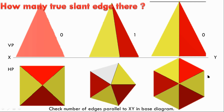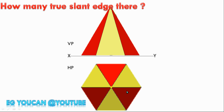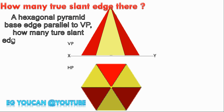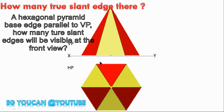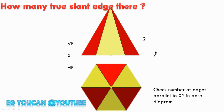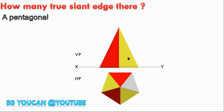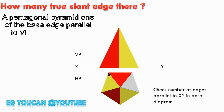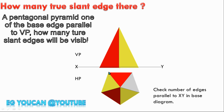I will ask a question. A hexagonal prism of base 20 mm is parallel to the vertical plane. How many true slant edges will be visible in the front view? The right side is XY parallel, the left side is XY parallel — so the number of true slant edges is 2. Either from diagram or theory, the answer is 2. Next condition: a pentagonal prism with one base edge parallel to the vertical plane — no slant edge is XY parallel. The number of true slant edges is 0.